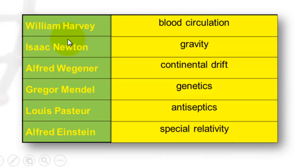It took quite a while before William Harvey's blood circulation theory was accepted. Isaac Newton had to wait a long time before his gravity theory was accepted. Wegener's continental drift theory took more than 50 years. Mendel's genetics took more than 50 years. Louis Pasteur came up with antiseptics, yet it took many decades before hospitals accepted it. And Alfred Einstein's special relativity theory was rejected for a very long time.